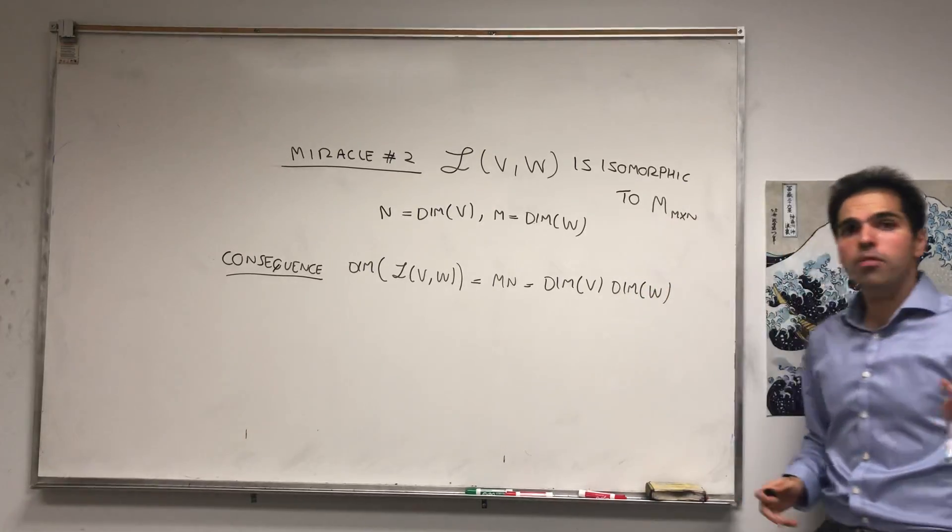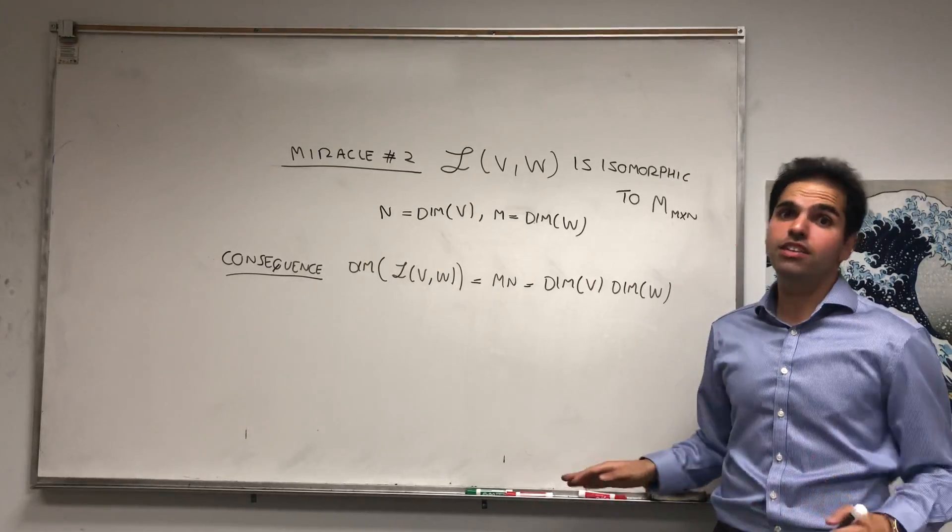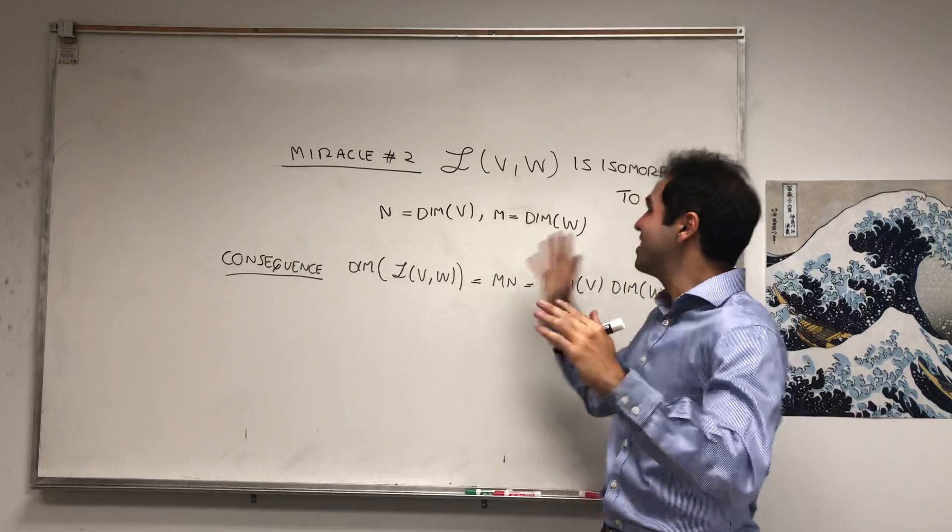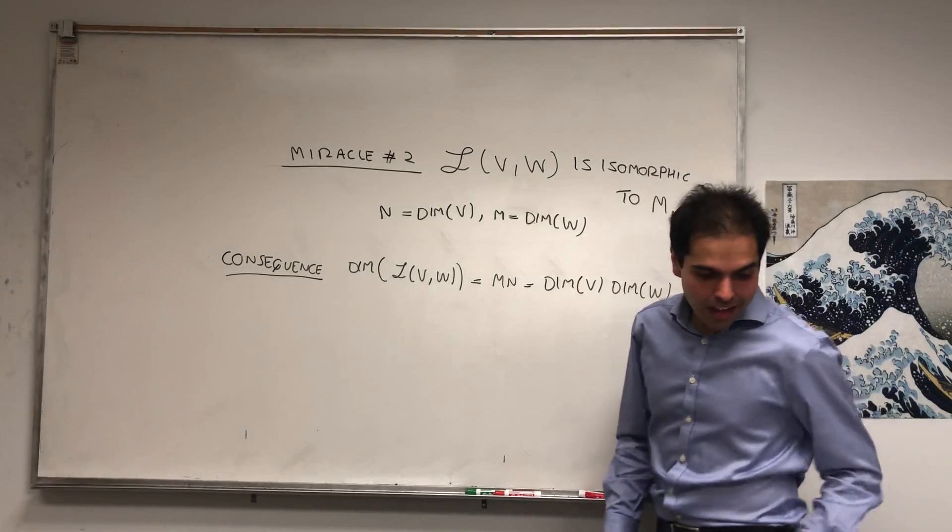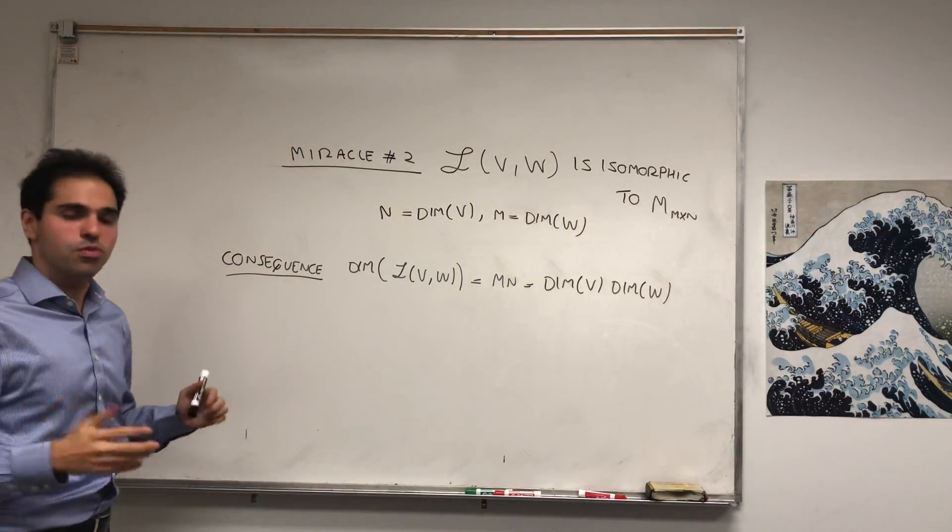Very wrong, by the way, for infinite-dimensional vector spaces. There could be lots of linear transformations, and this is why PDEs are so hard, because there's so many of them and they're very hard to study. Okay. What's more interesting in this case is the isomorphism.